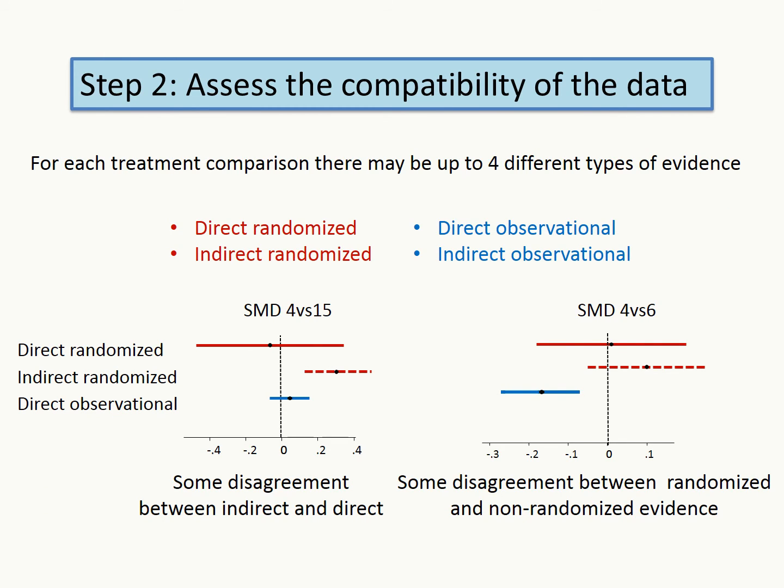These are the summary effects for the comparisons of drug 4 versus drug 15, and drug 4 versus drug 6. Each line corresponds to the summary effect using a different source of evidence. For the 4 versus 15 comparison, we observe some disagreement between the indirect randomized evidence and the direct randomized or non-randomized evidence. For the 4 versus 6 comparison, there is some disagreement between non-randomized evidence and randomized direct or indirect evidence. Differences between sources of evidence were much smaller for the other treatment comparisons in the network.